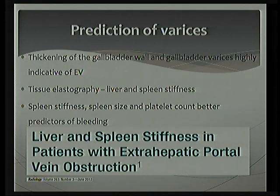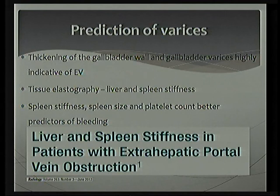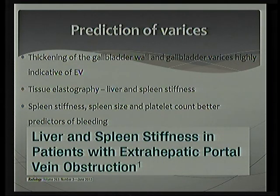There are studies evaluating whether we could predict varices without endoscopy. Endoscopy in young children requires anesthesia and is not a one-time procedure — multiple sessions require multiple anesthesias, raising risk of neurocognitive developmental issues. Studies found few factors predicting high risk of varices: presence of thickened gallbladder wall or pericholecystic varices, and tissue elastography assessing liver and spleen stiffness. Stiff spleen, spleen size, and platelet counts are better predictors of varices in children, identifying which children should be subjected to endoscopy.